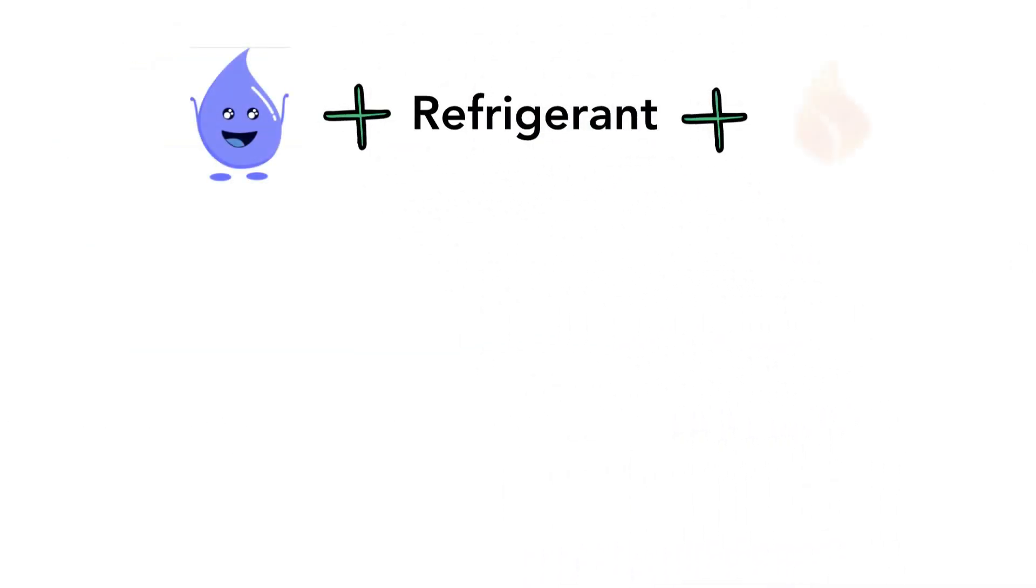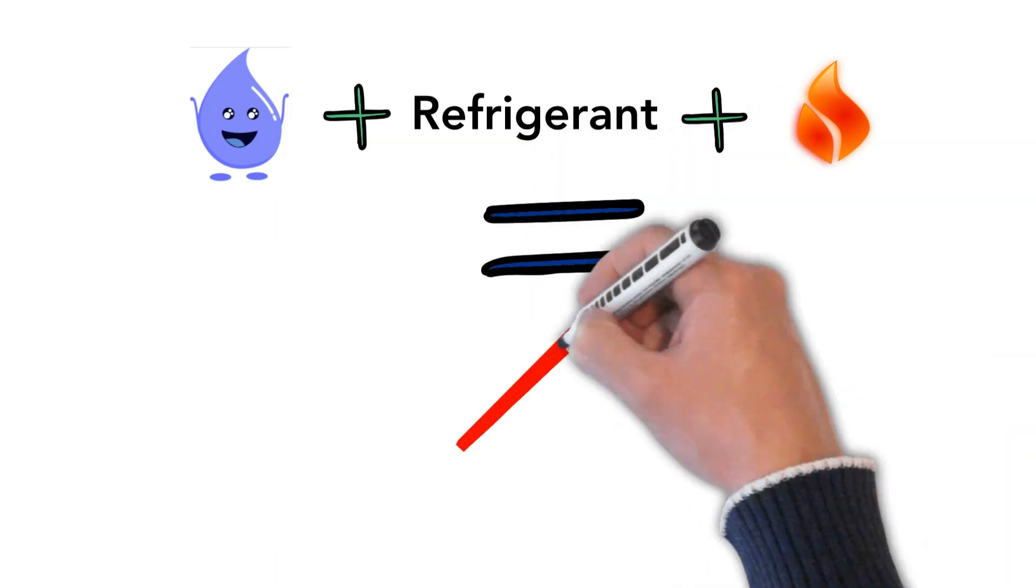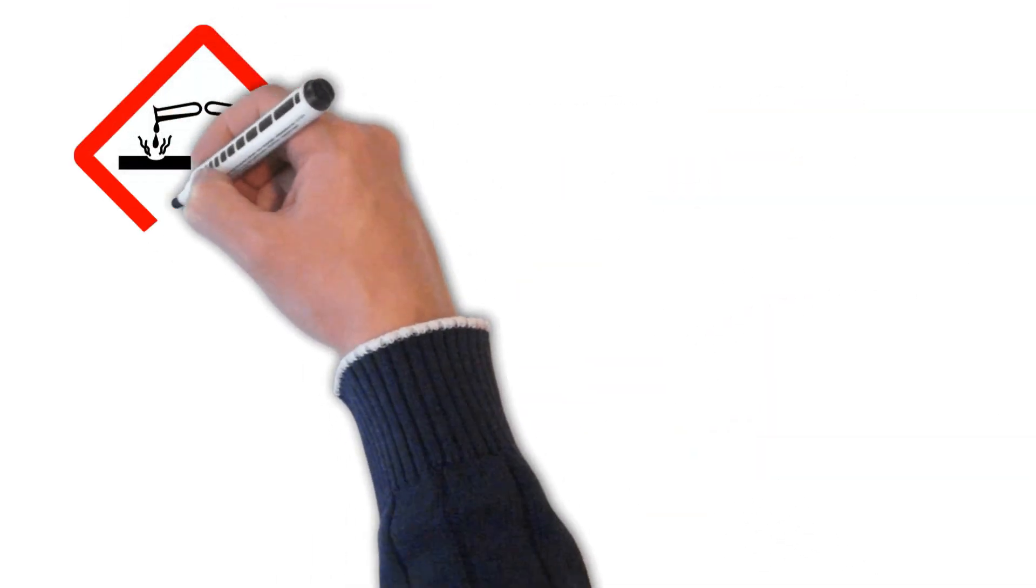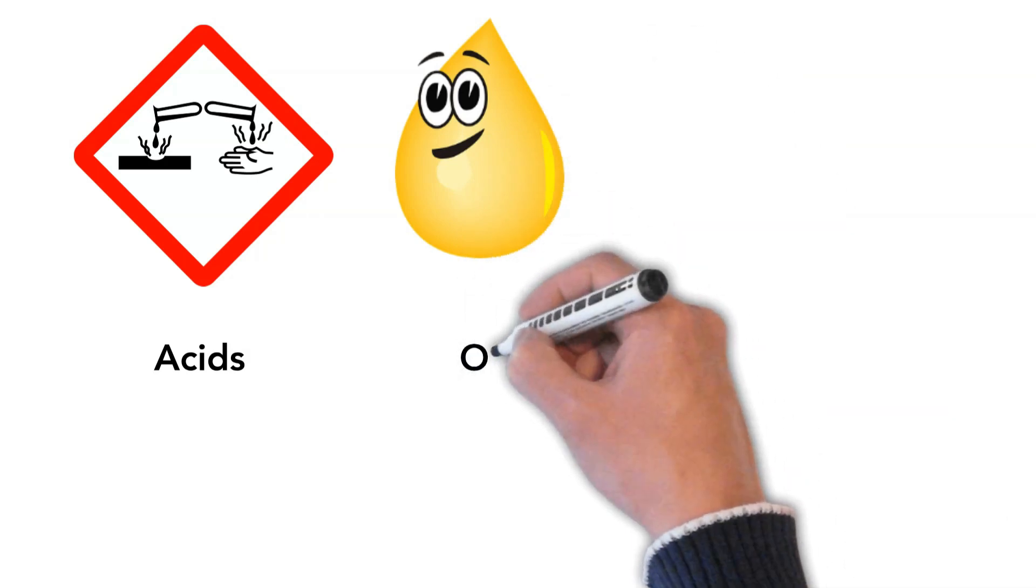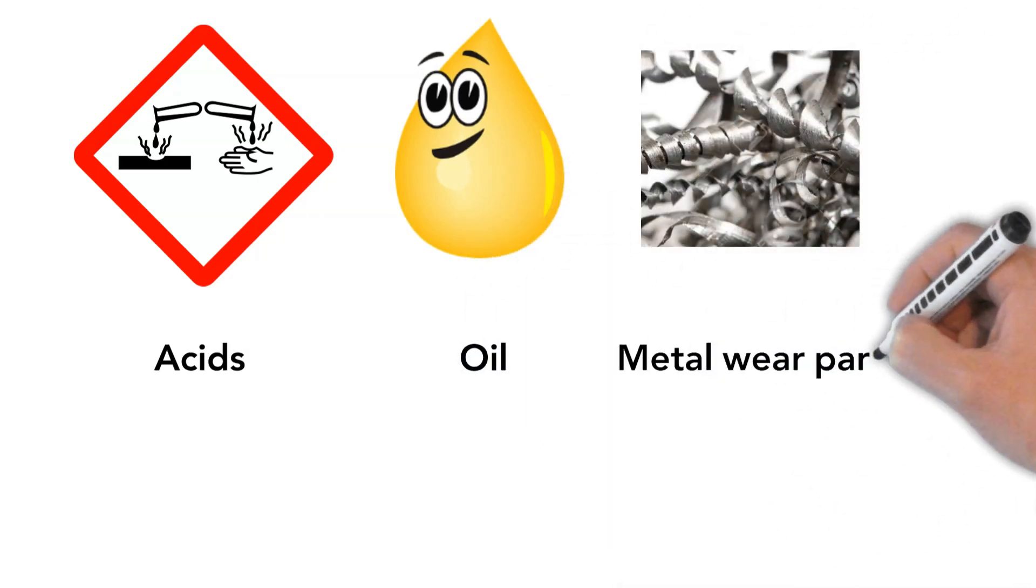Moisture, refrigerants, and heat can also combine to form acids. These acids mix with the oil and metal wear particles, leading to the formation of sludge.